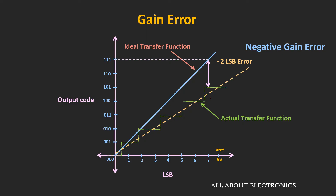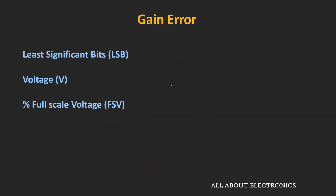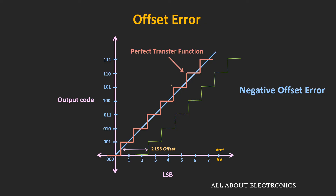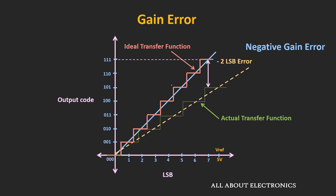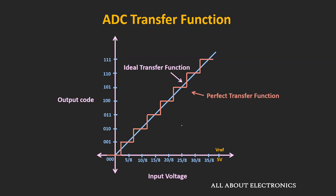As you can see here, the gain error equals −2LSB, because even when the input has reached the full-scale voltage, the output code hasn't reached the full-scale output code. Similar to offset error, gain error is also represented in all three formats and can be corrected using software. But due to both gain error and offset error, the overall conversion range of the ADC reduces. Once we correct both errors, the actual transfer function should match the perfect transfer function — but because of nonlinearities in the ADC, mainly differential and integral nonlinearities, it still deviates.